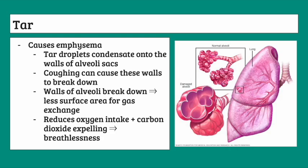Tar can also cause emphysema. When tar droplets condense onto the walls of alveoli and you start coughing, this coughing can cause the walls of the alveoli to break down. As they break down, there will be less surface area for gas exchange, reducing oxygen intake and carbon dioxide expulsion, which can lead to breathlessness. Essentially, emphysema is the destruction of alveoli sacs by tar, which reduces the surface area for gas exchange.